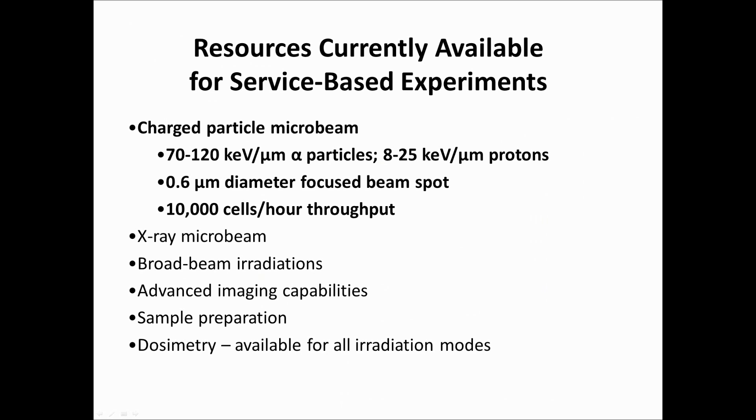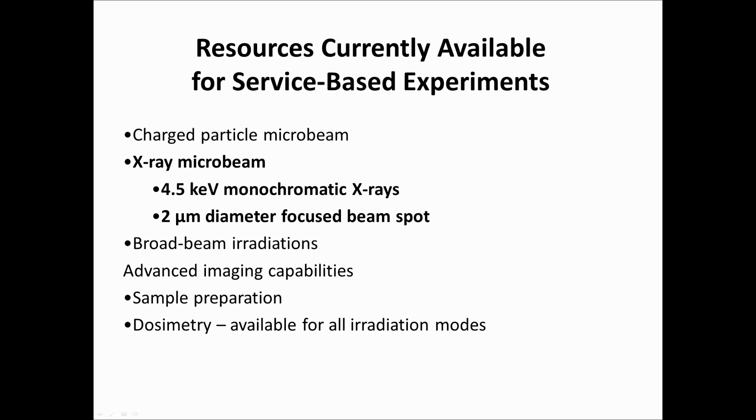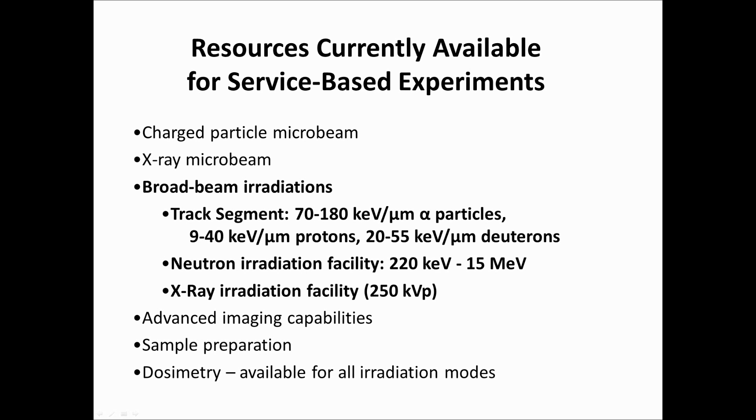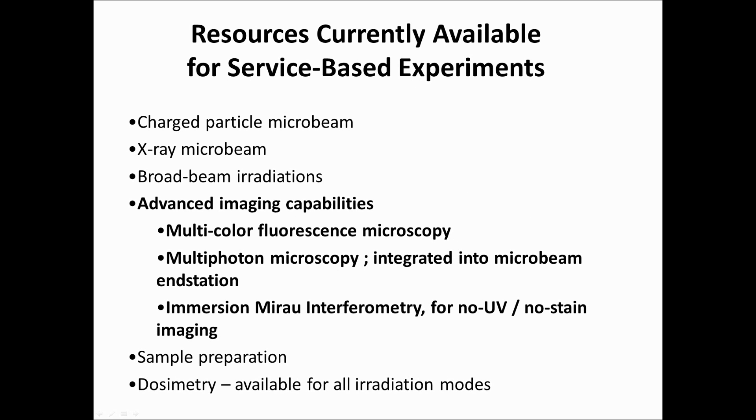These are things that we currently have at RARAP. The charge particle microbeam, alpha particles of 7 to 120 kV or 8 to 25 kV protons, kV per micron. 0.6 micron diameter spot, 10,000 cells per hour. We have the X-ray microbeam with monochromatic X-rays, 4.5 kV, 2 micrometer diameter spot. Broad beam radiations track segment, alpha particles, protons and deuterons.